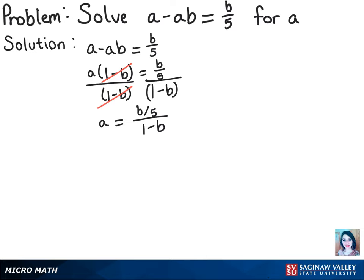Then we can simplify the fraction on the right side. And that will get us a equals b over 5 times the quantity 1 minus b.